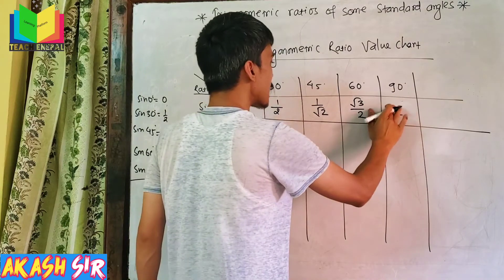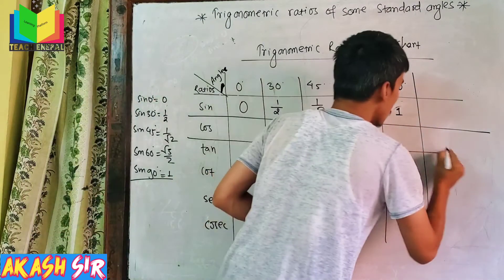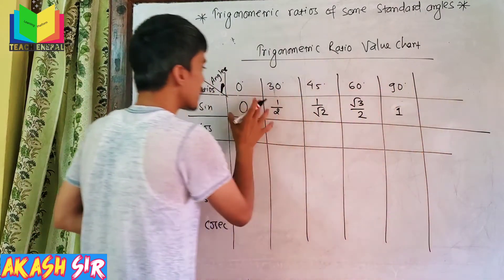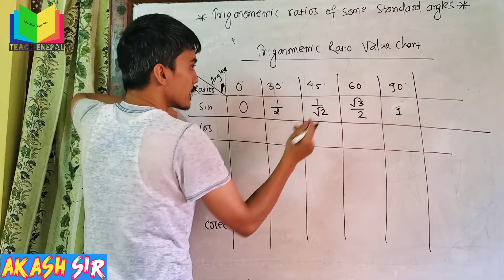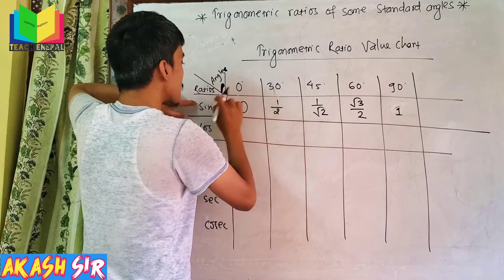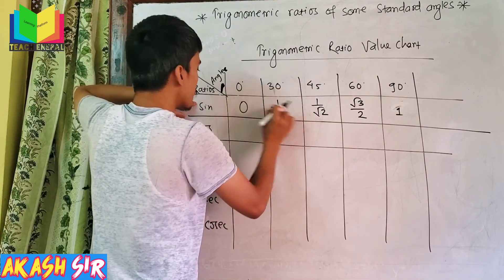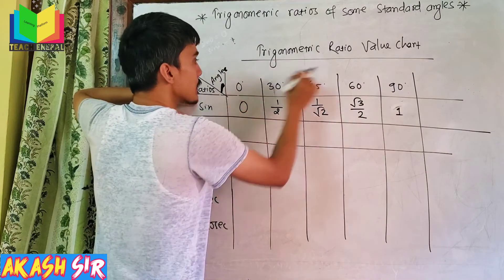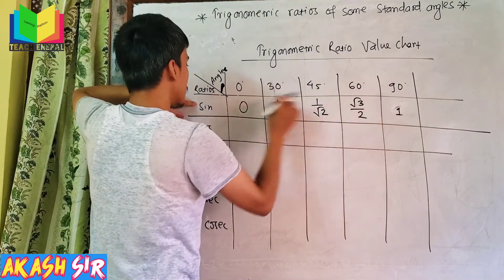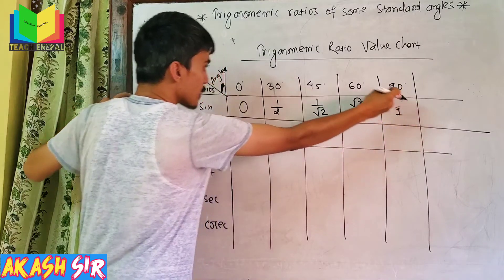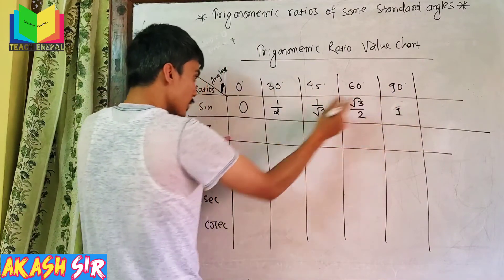We will start with sin 30, and sin 45 is 1 by root 2. Sin 60 is root 3 by 2. Sin 90 is 1.